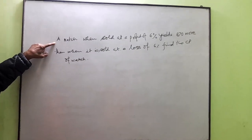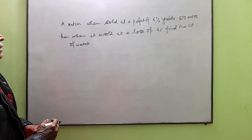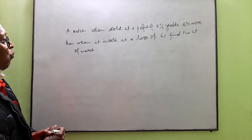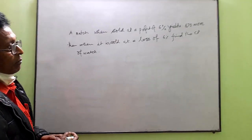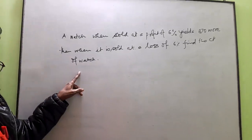Here the question is: A watch when sold at a profit of 6% yields 870 more than when it is sold at a loss of 6%. Find the CP. So you are asked here to find the CP.